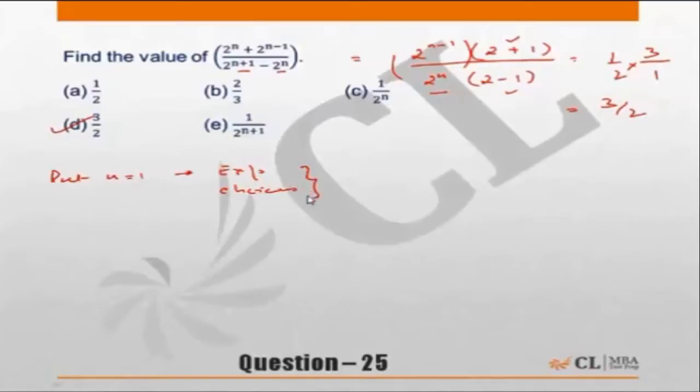Whichever matches should be the answer. For n equal to 1, the value of the expression will be 2 to power 1 plus 2 to power 0 upon 2 to power 1 plus 1, which is 2 plus 1 is 3 upon 2 minus 2 to power 1. This is nothing but 3 upon 2.